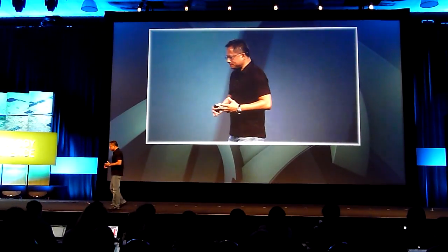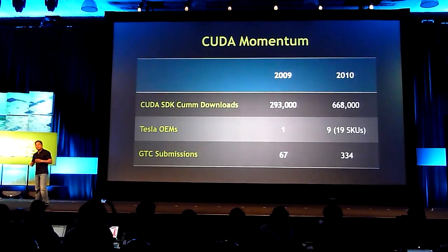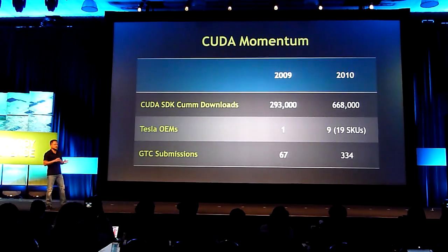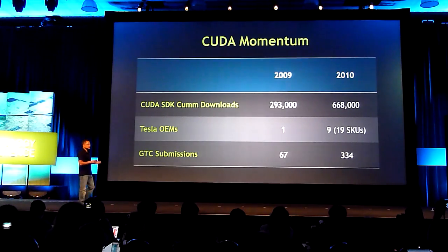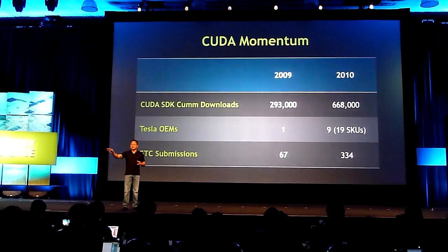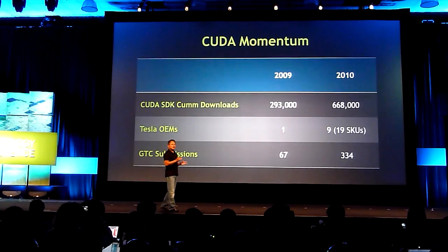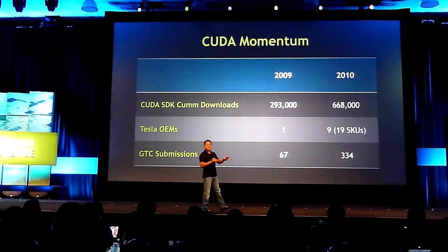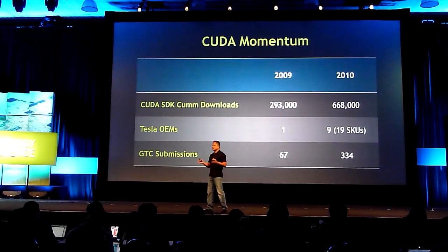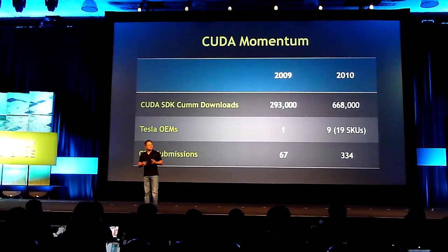I'd like to talk about CUDA's momentum and CUDA's adoption all over the world. There are a lot of different ways you can measure CUDA's acceptance, and I've chosen three for a very specific reason. The first one is the CUDA SDK cumulative downloads. This is a reflection of the number of engineers, researchers, and scientists all over the world that are downloading our SDK, running it on their PC, and developing some application or investigating some algorithm themselves.